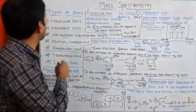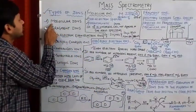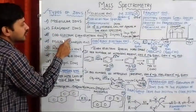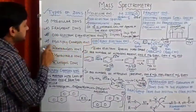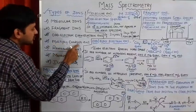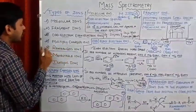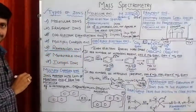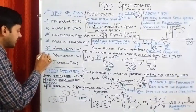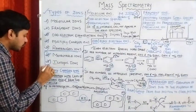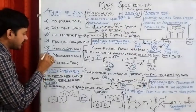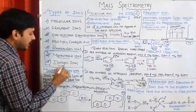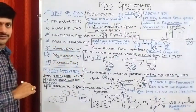So, this covers molecular ions, fragment ions, odd and even electron ions, multiply charged ions, and rearranged ions. In the coming lectures, we are going to have a detailed discussion on metastable ions and isotopic ions.